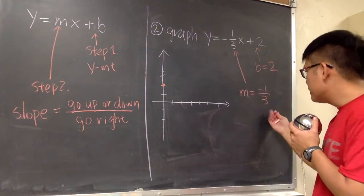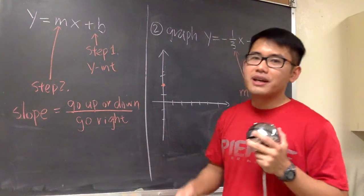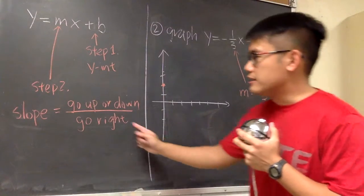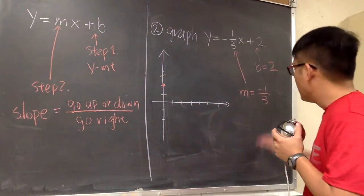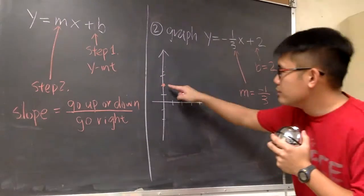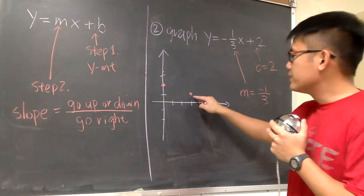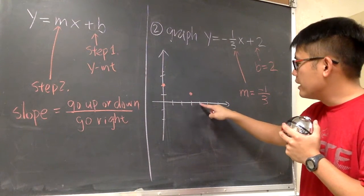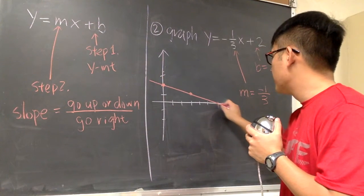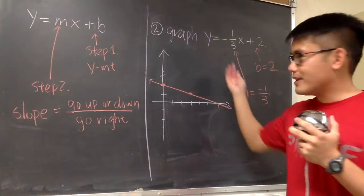With m written as negative 1 on top over 3, the negative 1 on top tells us to go down one time. The denominator should always be positive, meaning we always move to the right. So from the starting point, go down once and then move to the right 3 times — giving us our second point. You can repeat: go down once, then 1, 2, 3 to the right. Two points is enough, and you're done.